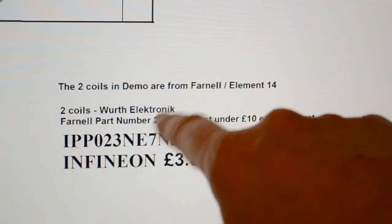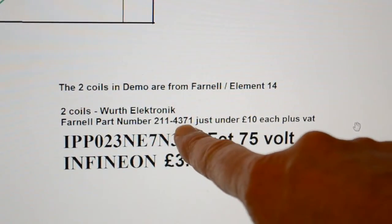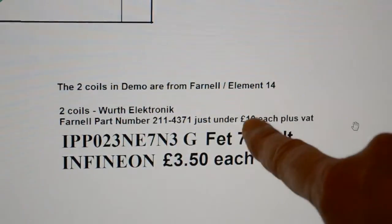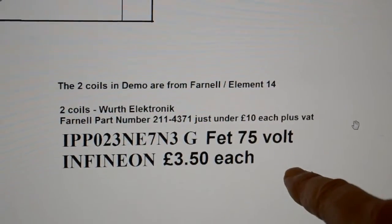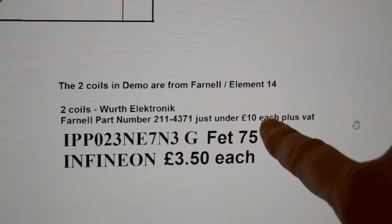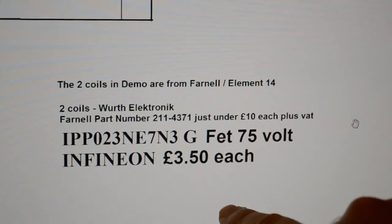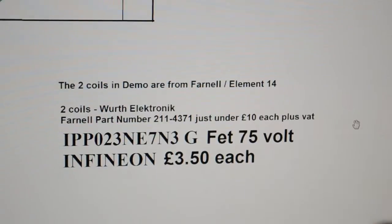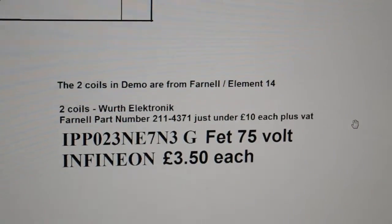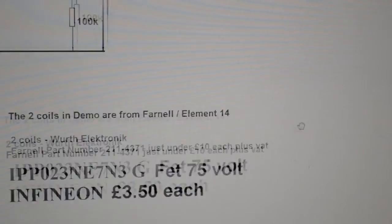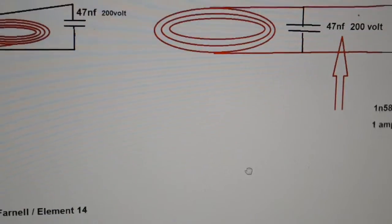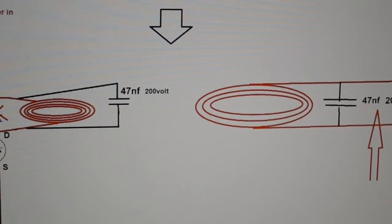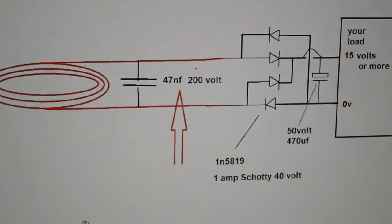There's the two coils - Wurth electronic, believe they're German. Find the part number - just under 10 pounds each. I think the others were just under five pounds each. So a small bit more money but a lot more power. And there the FET I used - 75 volt.